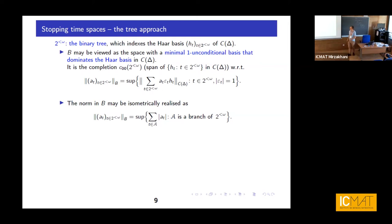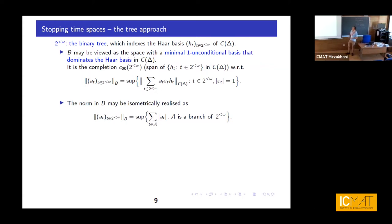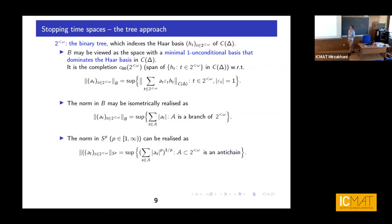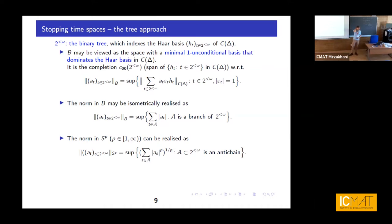Actually there is a better picture: you can forget about continuous functions and compute the norm in L1, but not for every subset. The norm in B may be identified as the supremum over the L1 norms with respect to the branches of the dyadic tree. Likewise, SP is like computing the LP norm but with respect to anti-chains. If you think of continuous functions on the Cantor set acting as functionals on capital L1, we have a reminiscence of this here, reflected by the duality between branches and anti-chains.